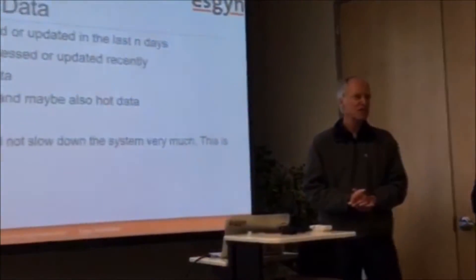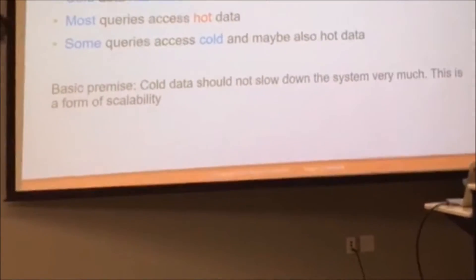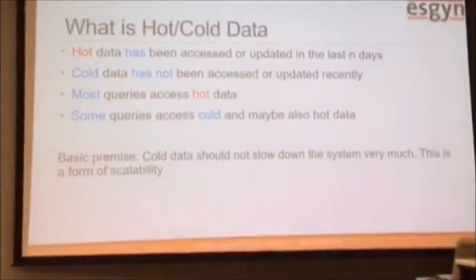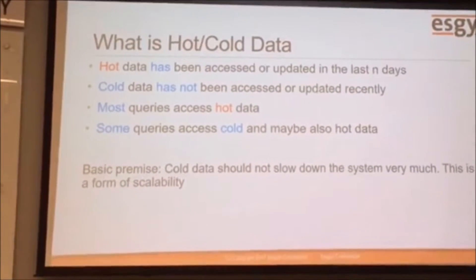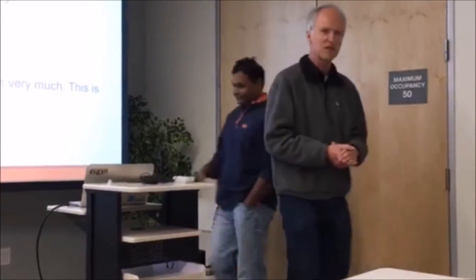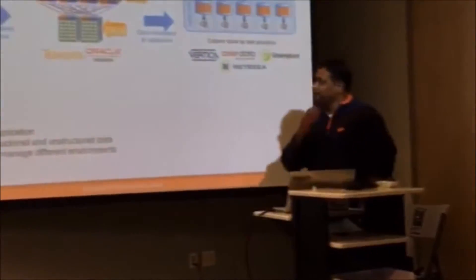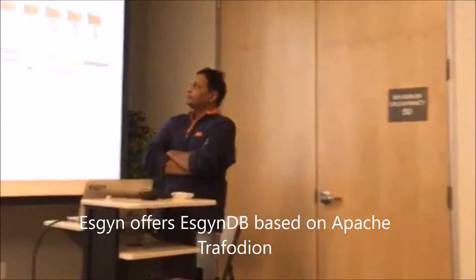The basic promise is that cold data — in other words, history — should be available. It shouldn't cost you a lot of extra money. It shouldn't slow down the system very much. When I come back to talking about the comparative landscape of how this is done, maybe I'll talk more on why I consider this a form of scalability, but I'll give more of an overview of the business case and show a broader scope of the use case.